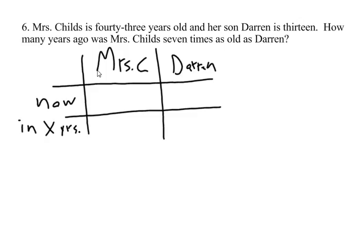So right now, Mrs. Childs is 43 years old and her son Darren is 13 — the problem is actually giving us numbers here. Now, in this "how many years ago" — we don't know X — was Mrs. Childs seven times as old as Darren? Well, as soon as we get that "how many years ago," we can build expressions.